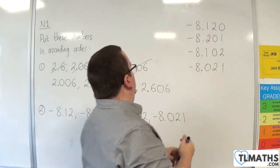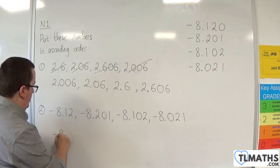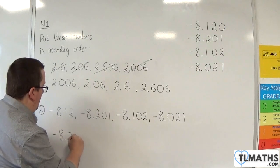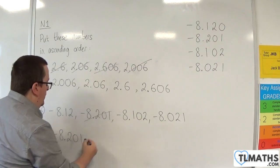which is the 201. So minus 8.201, the most negative one, goes first.